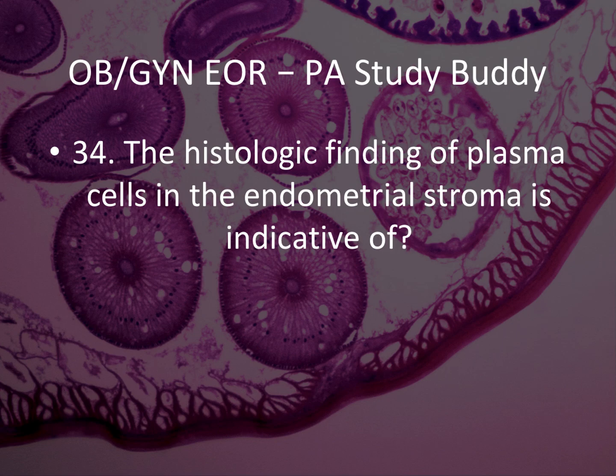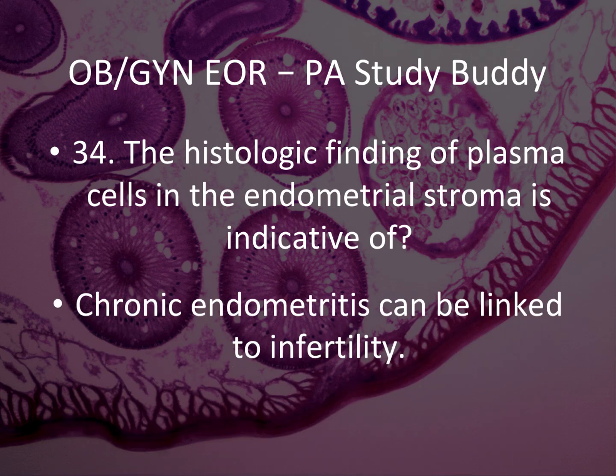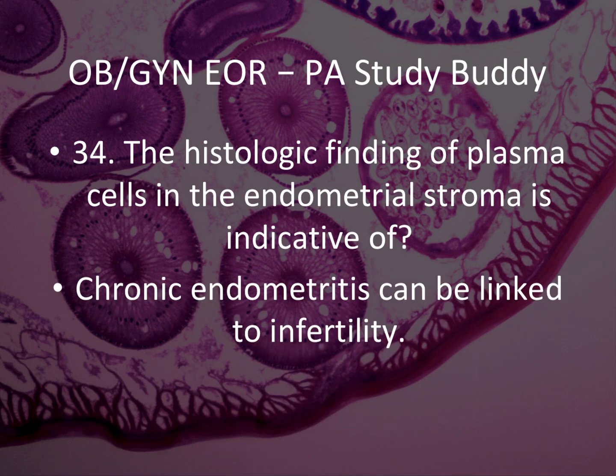Question 34: The histologic finding of plasma cells in the endometrial stroma is indicative of chronic endometritis, which can be linked with infertility. They'll tell you the histological report shows plasma cells in the stroma — think endometritis.